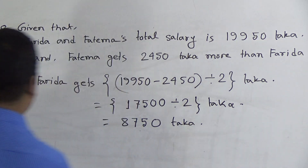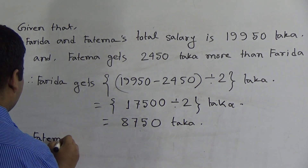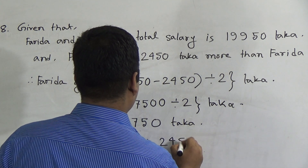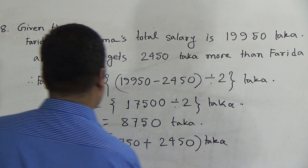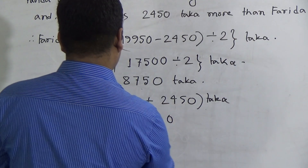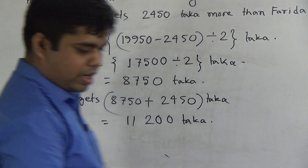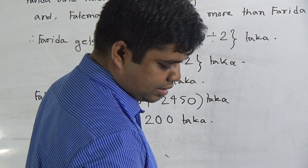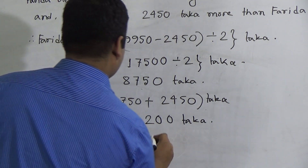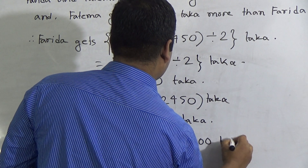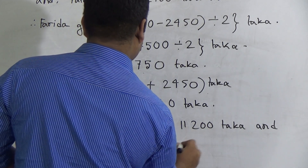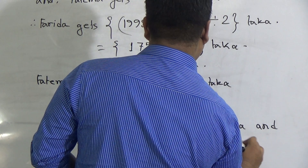Now we find out Fatima's salary. Fatima gets 8,750 plus 2,450 Taka. We do addition: 0; 5; 5 and 4 plus 7 is 11, carry 1; that gives 12; result is 11,200 Taka. So 11,200 Taka is Fatima's salary. We write the answer: Fatima's salary is 11,200 Taka and Forida's salary is 8,750 Taka.